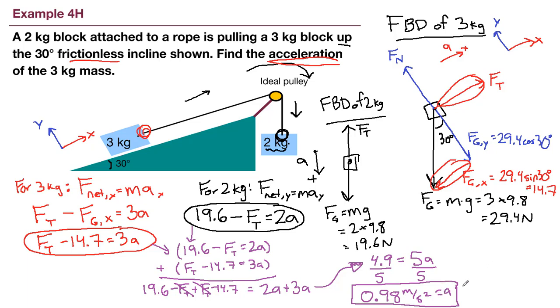All right, we were not asked to find the tension, but I'm going to go ahead and show us what that would look like. We would just need to plug this acceleration back into either one of these equations. So tension minus 14.7 equals three times 0.98. So tension equals the three times 0.98 is 2.94. So 2.94 plus 14.7.